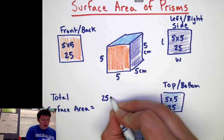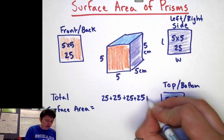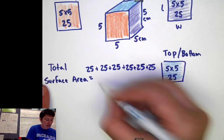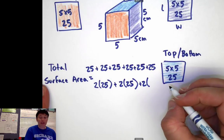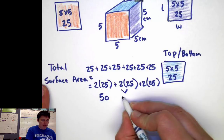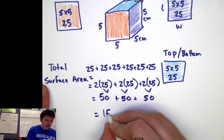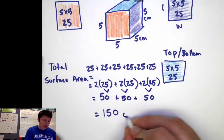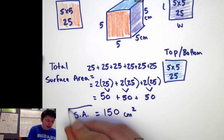The front is 25 plus the back is 25, the left and the right were both 25, and the top and the bottom were both 25 — so I'm going to add up all of these. Another way to show that is: two 25s for the top and bottom, plus two 25s for the left and right, plus two 25s for the front and back. So 25 and 25 make 50, and each pair is 50. Adding them up: 50 plus 50 plus 50 is 150. So the whole surface area of this entire box is 150 square centimeters. I'll write SA for surface area and put a box around that as my final answer.